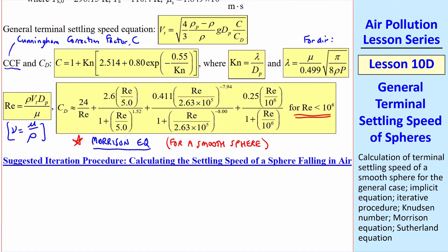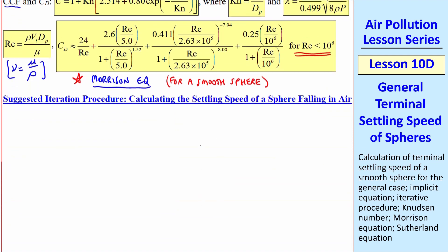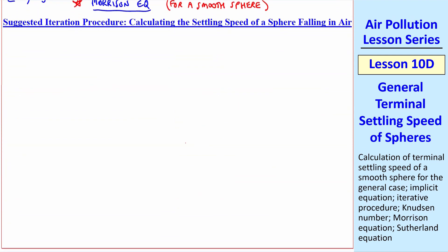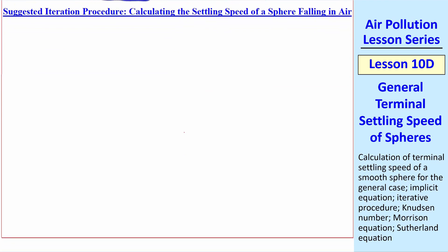It applies to a smooth sphere for any Reynolds number less than 10⁶. There are several schemes you can come up with to try to do this iteration. I've tried a few, and here's the one that I find works for nearly every problem.